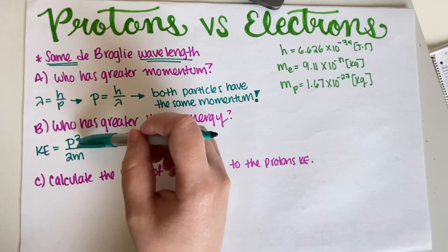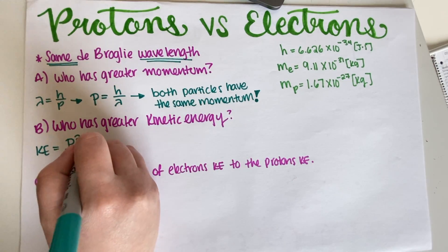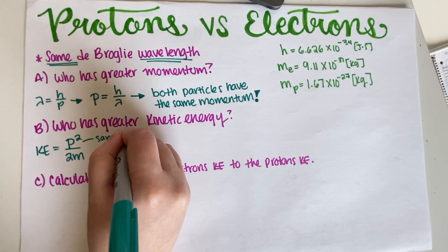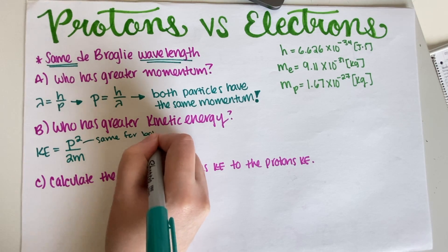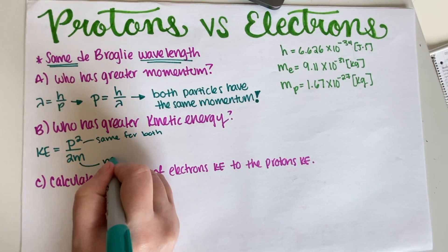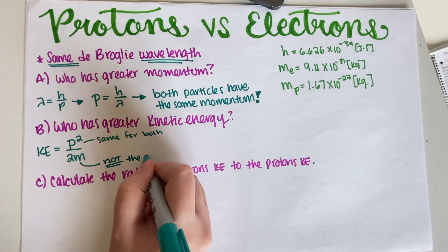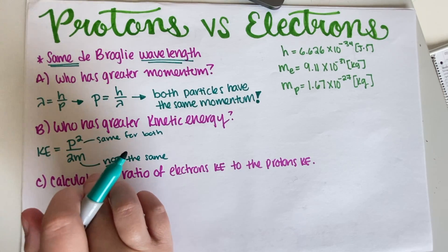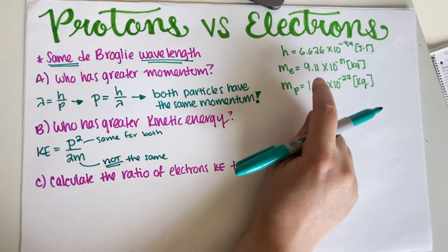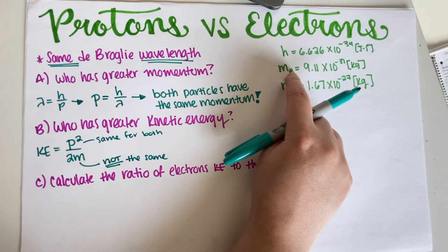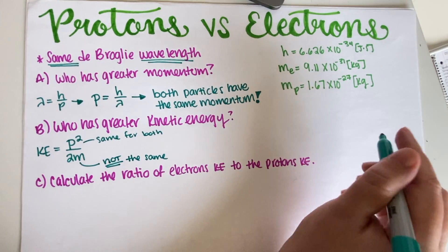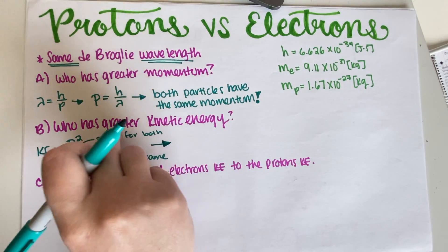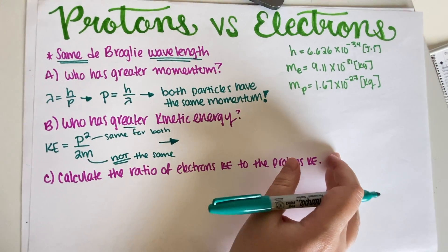So this momentum is the same for both of them, but then this mass is not the same. It's not the same because the kinetic energy of the proton is going to use the mass of the proton, the kinetic energy of the electron is going to use the mass of the electron. So no, they are not going to have the same kinetic energy.